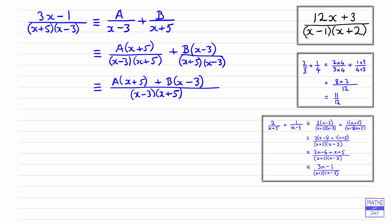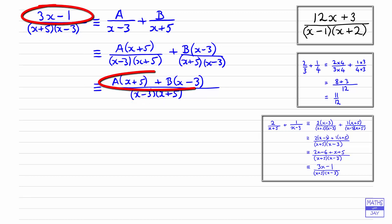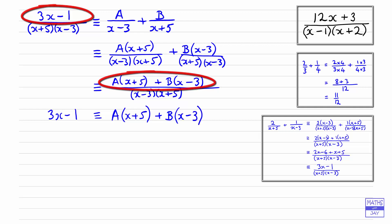They've been combined into one fraction now. Because the denominators are the same on the right-hand side and the left-hand side, the numerators must be the same as well. So we're no longer dealing with fractions — we can see that 3x minus 1, which is the numerator of the left-hand side, must be the same as the numerator on the right-hand side: A times x plus 5 plus B times x minus 3. The important thing to remember here is that we've got identically equals, which means we can put in any value of x and that will be true.